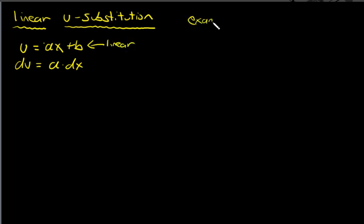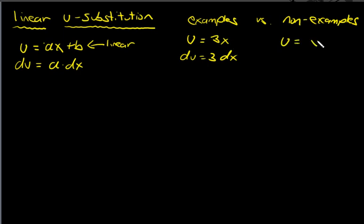That's what it is. And again, why is this called a linear U sub? Because that U is linear. So I'll give you a couple examples versus non-examples. So one example would be if you're doing an integration problem and you let U equal 3X, DU would be 3 DX. Notice why is this considered a linear U? Because 3X is linear. As opposed to if U equaled X cubed, DU would be 3X squared DX. And that is not considered to be a linear U because X cubed isn't linear. It's a polynomial degree 3, it's a cubic.